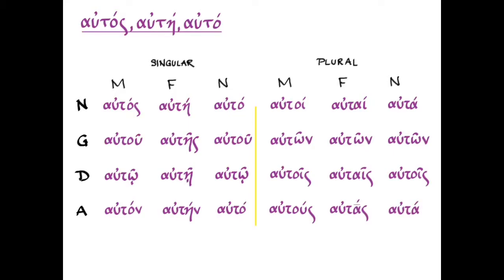As you can see, it declines very much like a first and second declension adjective of the type kalos, kale, kalon, with the exception of the neuter nominative and accusative singular, where we have the irregularity that there is no new on the end. So it's autaw and autaw. We've seen this in other declensions, including ekanos.